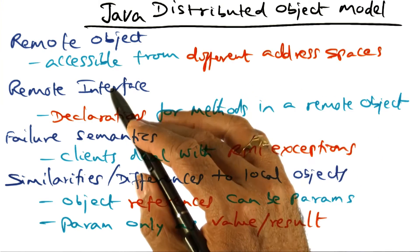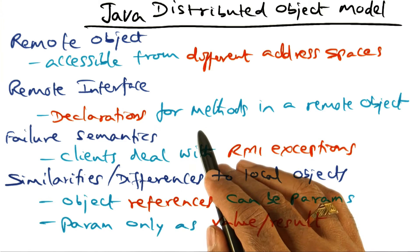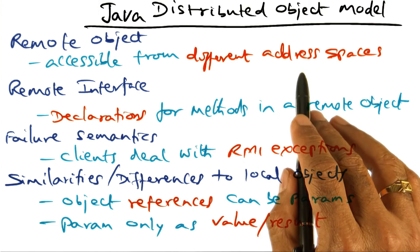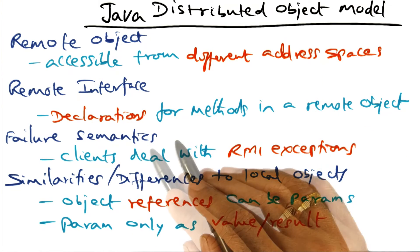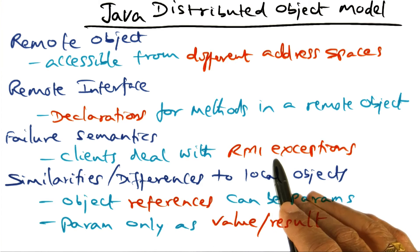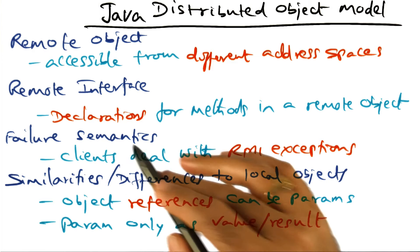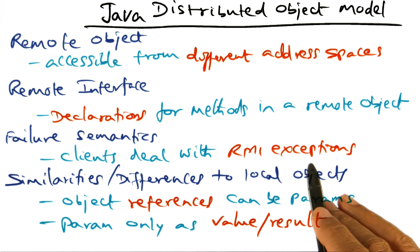Once you have a remote object, the remote interface is saying what are all the declarations for methods that are existing in the remote object that are accessible from clients anywhere. And in the distributed object model of Java, the clients have to deal with RMI exceptions. So that's the failure semantics of the distributed object model, that the clients have to deal with exceptions that might happen when a remote method is invoked by a client.